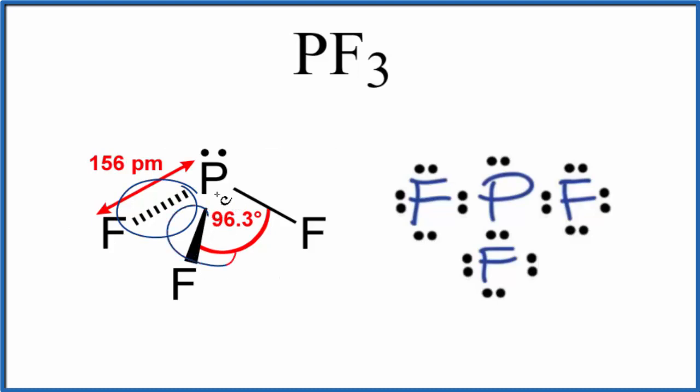And each one of these lines here represents a pair of electrons that's shared between the phosphorus and the fluorine. It's shared because this is a covalent bond and they share electrons.